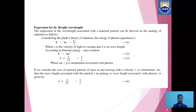If we consider the case of a material particle of mass m moving with a velocity v, that is momentum mv, then the wavelength associated with this particle in analogy to the wavelength associated with a photon is given by λ = h/mv = h/p.